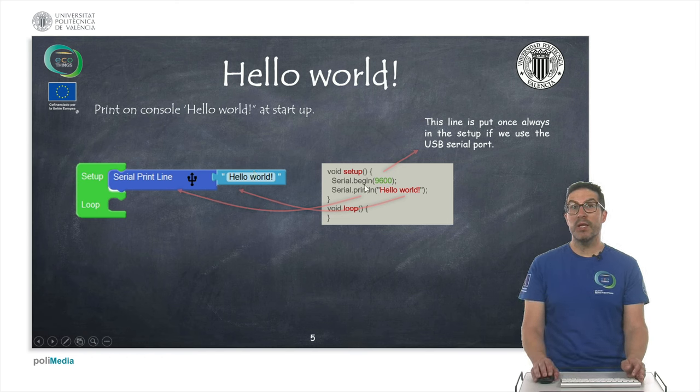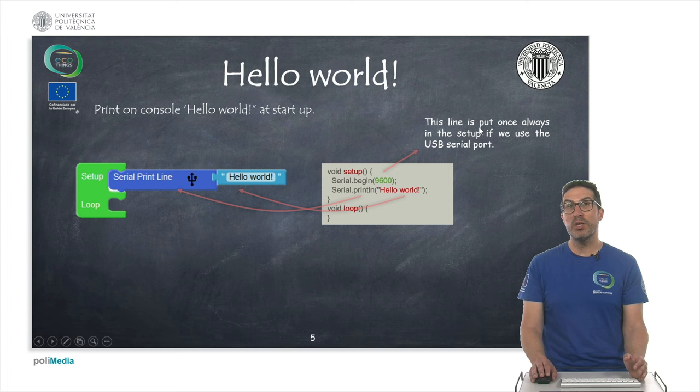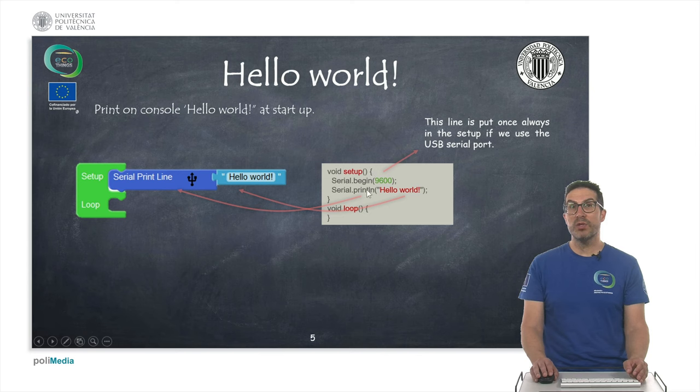The generated code has two main lines. First one is the begin instruction that is always put once if we use any USB serial port instruction in the setup. It's put always in the setup. And then the other instruction, the print line instruction here, will be put in the setup or in the loop, depending on your needs, with the proper sentence depending on your input.